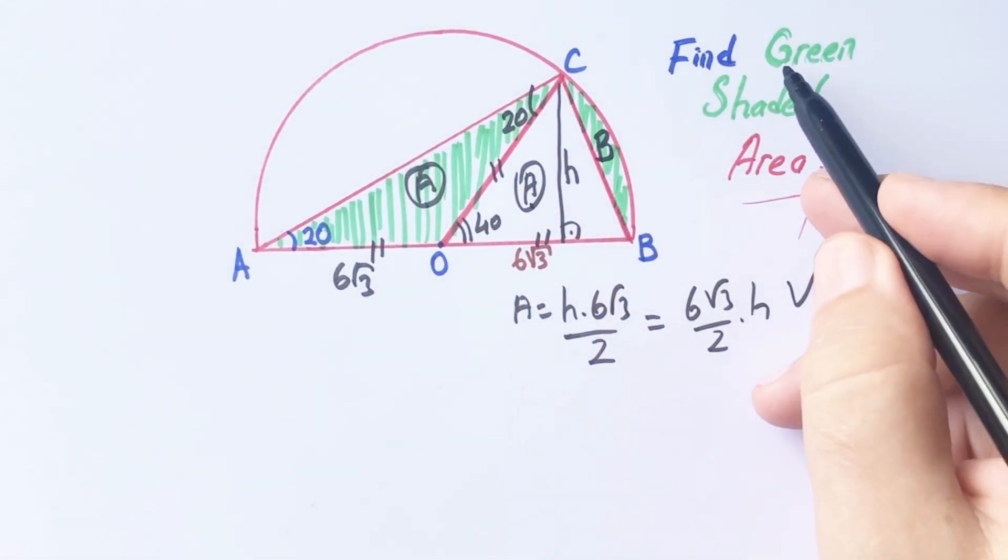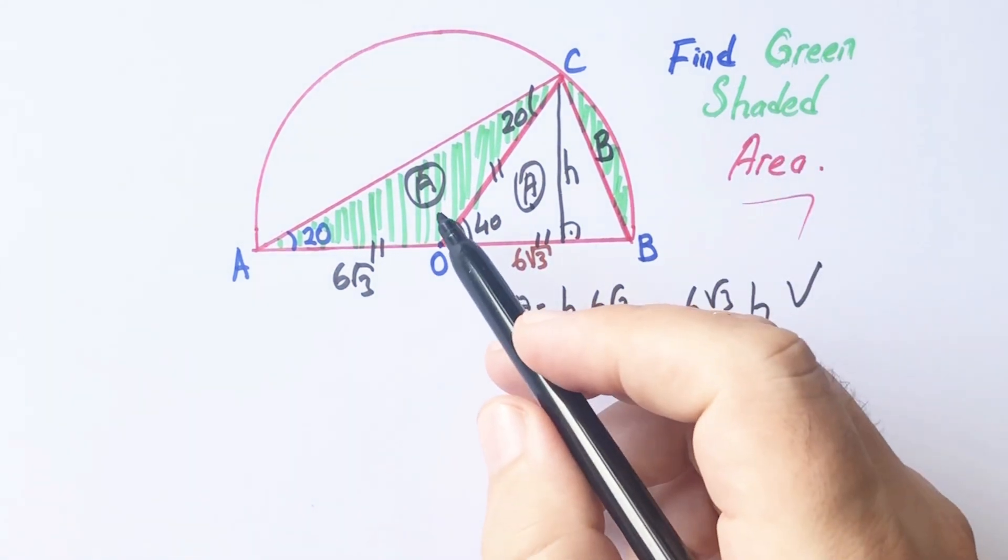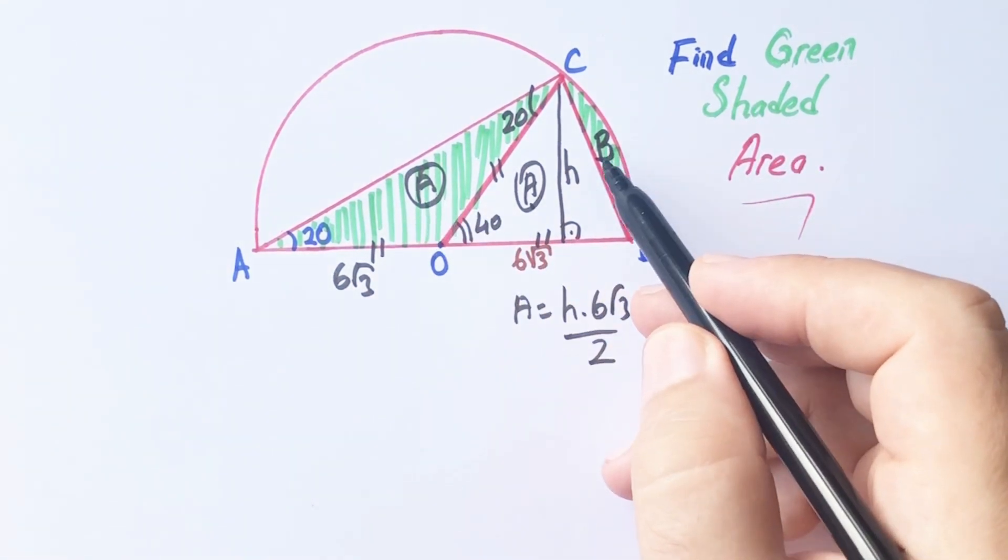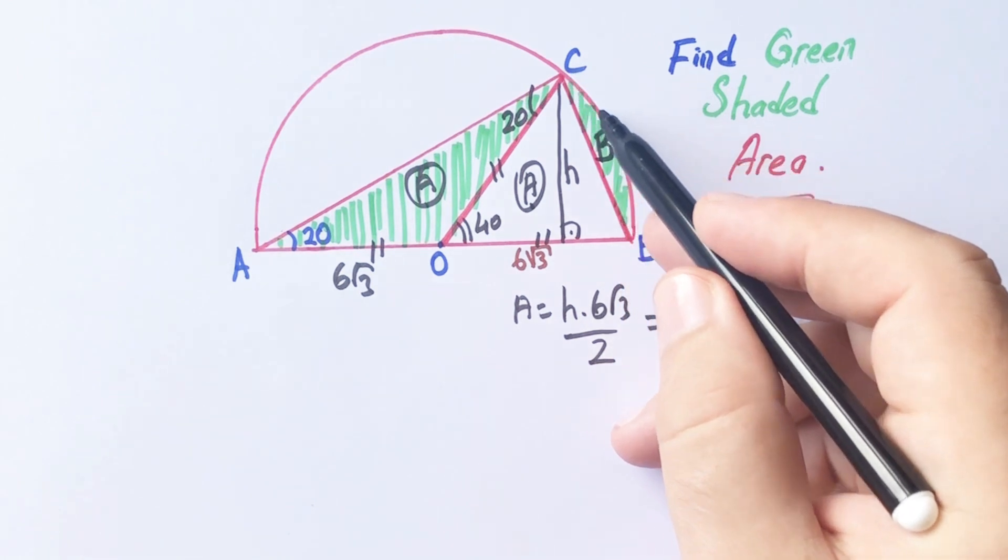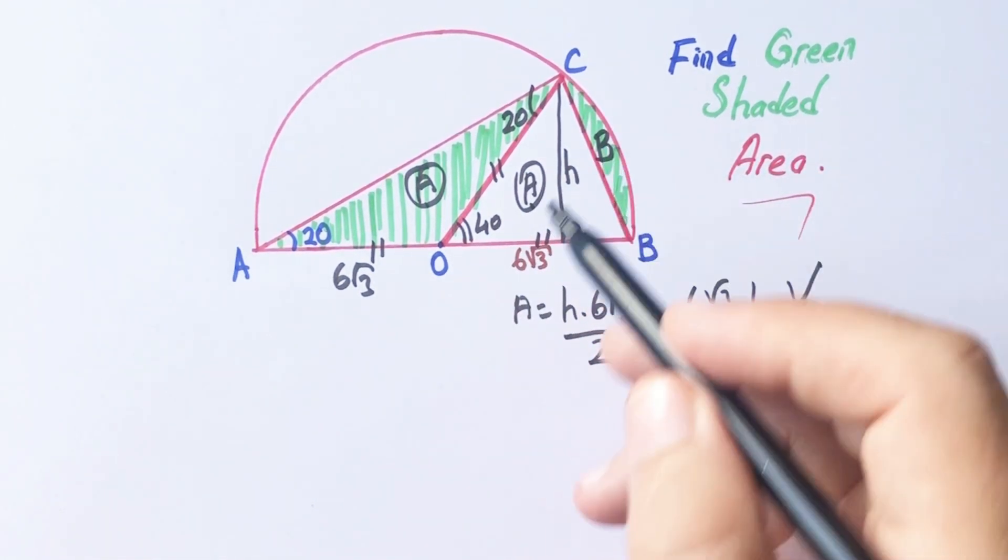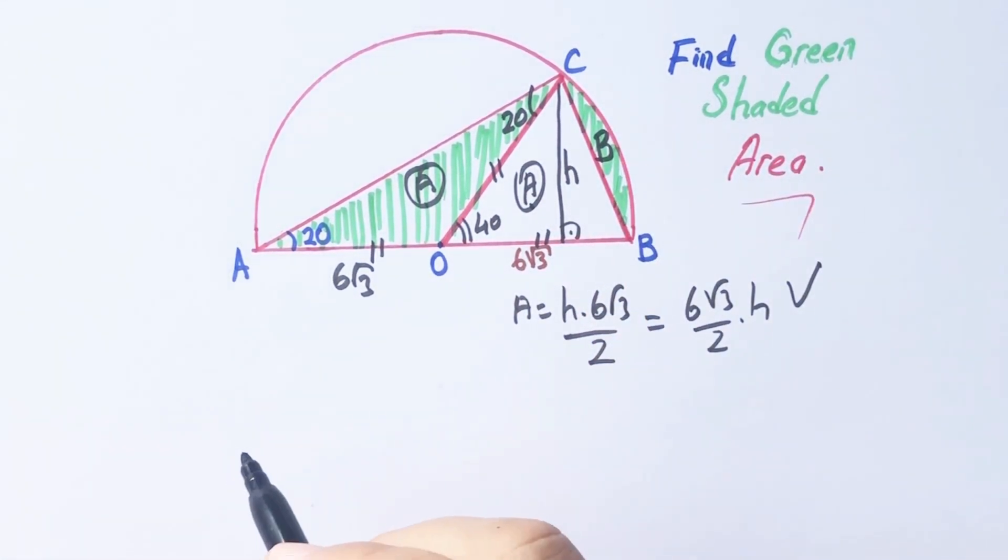Let's call this area uppercase B. If you notice that, if we calculate this circle-sector area, we get the green shaded area.